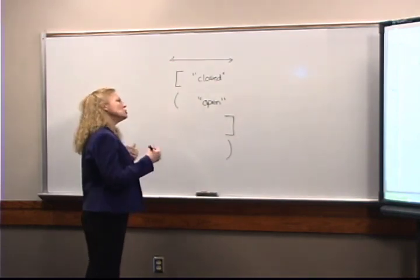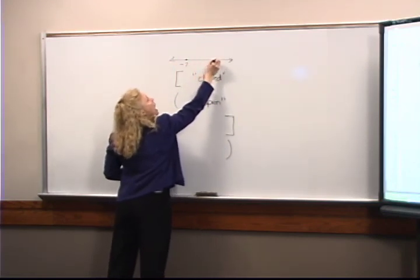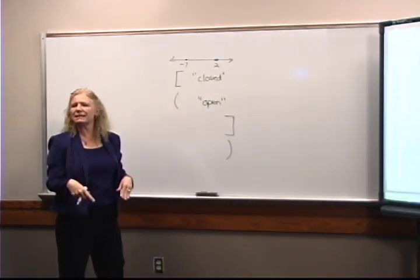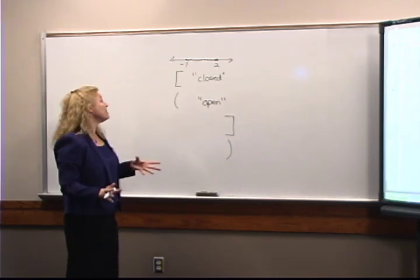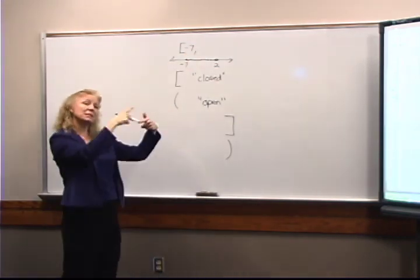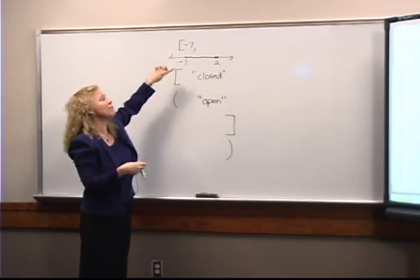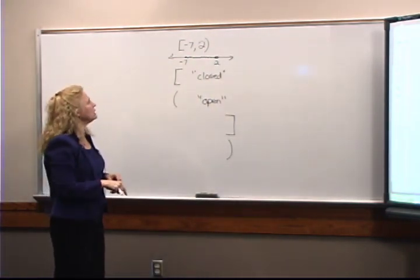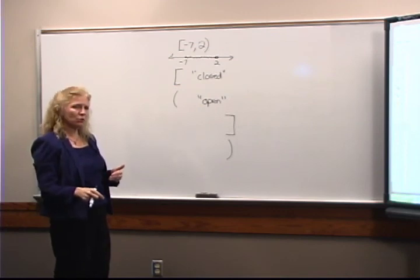For example, if I wanted to take the points from negative seven up to but not including two, I put an open circle on two. The way I would write that is: bracket negative seven — using the squared-off bracket because negative seven is included — and on the end with two I would use a parenthesis because two is not included. So that would be [-7, 2).